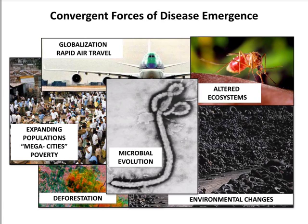Air travel is a big factor — it can bring viruses around the world very quickly. Our population growth is enormous; not only do we interact with each other and spread viruses, but we get closer to animals. We do things like deforestation that bring us into new environments, and various environmental changes like the tire trade bring infections around the world. The reason viruses can infect us is evolution — their genomes are plastic, they exist as quasi-species with lots of mutants, and one of those mutants may be just right for replicating in humans.